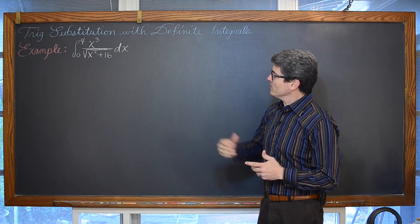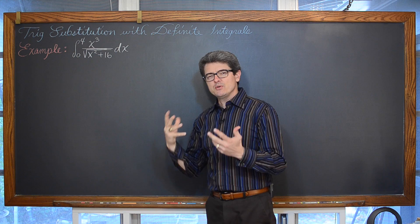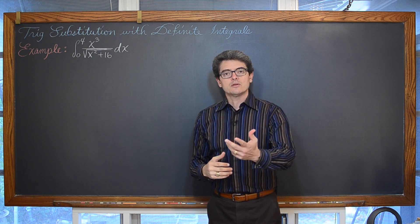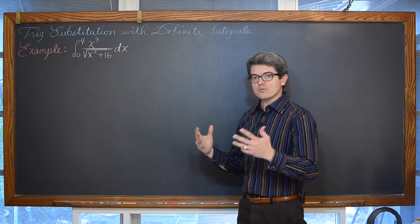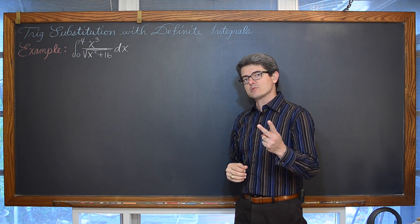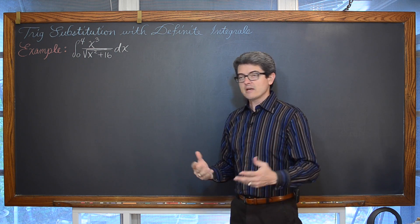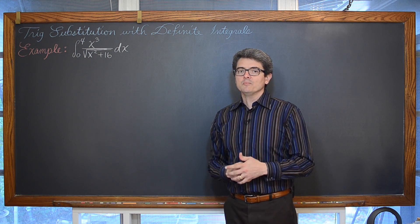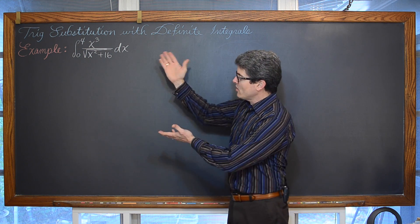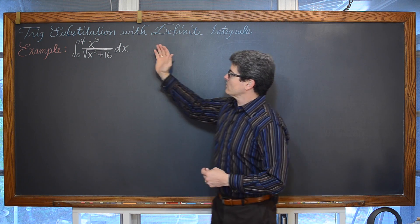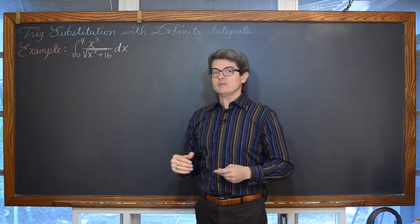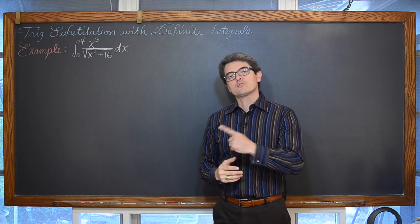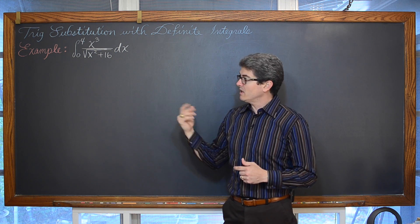Here we have a problem that is not going to be too difficult to work out, but it is going to be an example that will help you understand how to deal with those lower and upper limits, or those definite integrals. There are two ways to do this problem. The first way is to go off to the side and work it out as an indefinite integral. When you are finished, go back into references of x, bring in those lower and upper limits, and then finish the problem up.